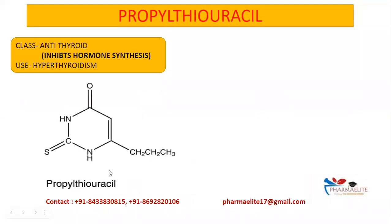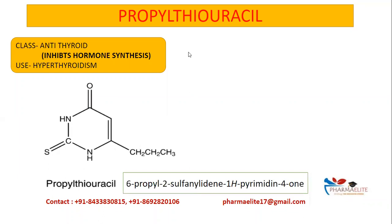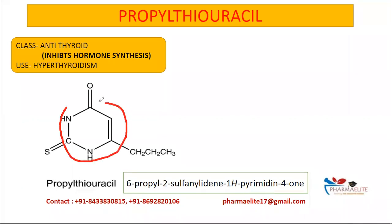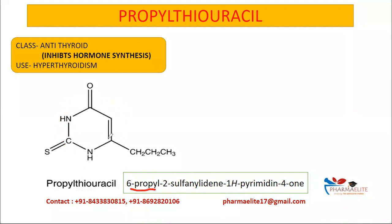This is the structure of propylthiouracil and its IUPAC name. One heterocyclic ring is present in its structure, which is the pyrimidine ring — a six-carbon cyclic ring with two nitrogen atoms. The IUPAC name begins with 6-propyl, referring to the propyl chain at the sixth position.